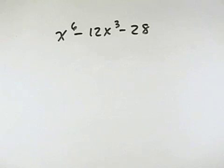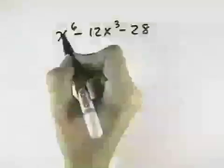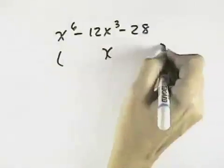We want to factor this completely. We first look for a greatest common factor. There isn't one. There's three terms, so we factor it as a trinomial, setting up our two parentheses.